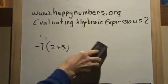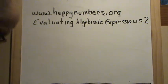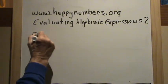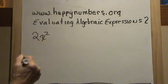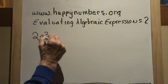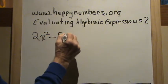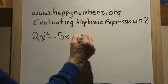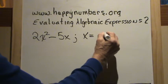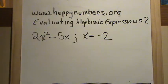Now for the gorilla problem — the big one. Let's try: 2x squared minus 5x, and they tell us that x is equal to negative 2. Go ahead and put the DVD on pause, work that problem, and then turn it on and we'll look at it together.